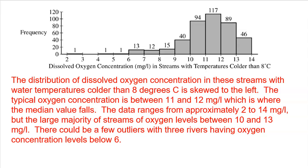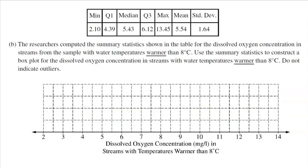Now, the typical oxygen concentration is somewhere between 11 and 12 milligrams per liter, which is where the median value falls. The data ranges from approximately 2 to 14 milligrams per liter, but the large majority of streams are somewhere between 10 and 13 milligrams per liter. There could be a few outliers with three rivers having oxygen concentration levels below 6, but can't verify that. They do look to be on the low side. Kept it short and simple, and I talked about the four items that I need to.